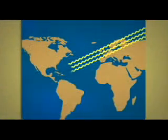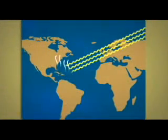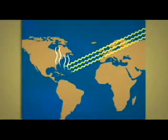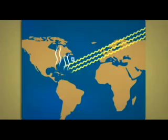Paradójicamente, el calentamiento global también produce lluvias e inundaciones más severas. ¿Por qué? Los rayos del Sol aumentan la temperatura de los océanos. Esto provoca mayor evaporación y precipitaciones más severas.